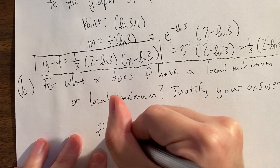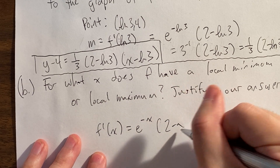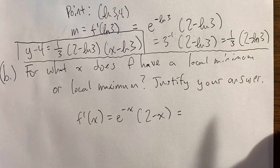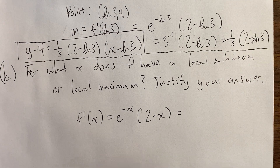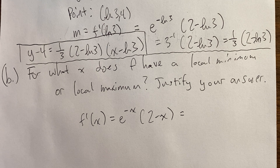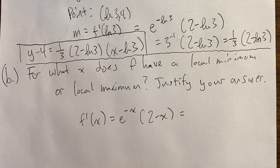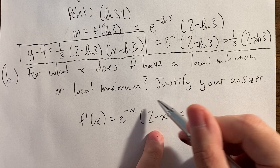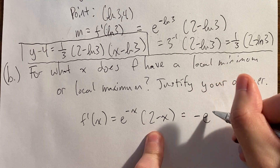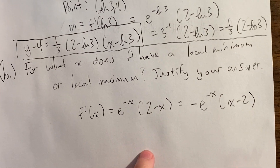I rewrite the derivative and factor it. I take the negative outside of (2 − x) to express it as −e^(−x)(x − 2). For sign charts, I prefer the form (x − something). Now I'm ready to draw the sign chart. Remember: e to any power is always positive, so e^(−x) never affects the sign chart — it can be ignored when determining signs.